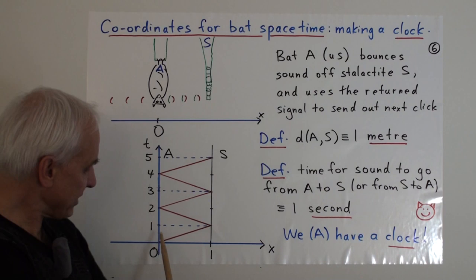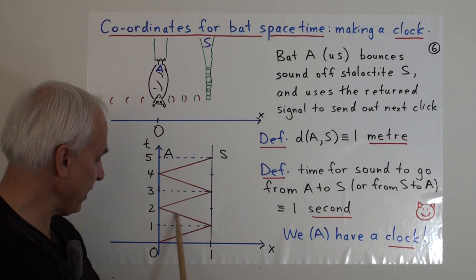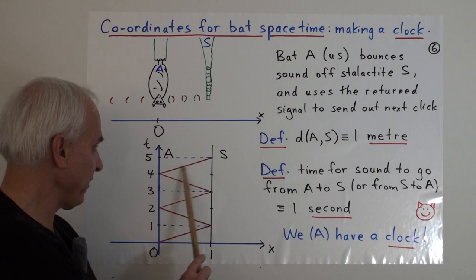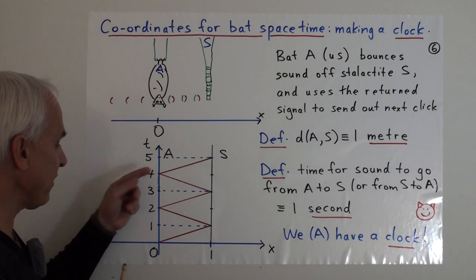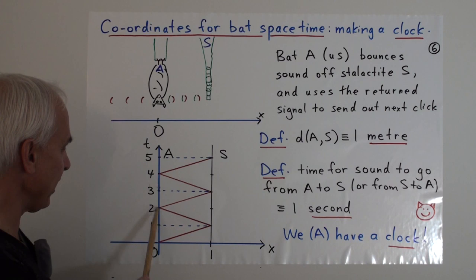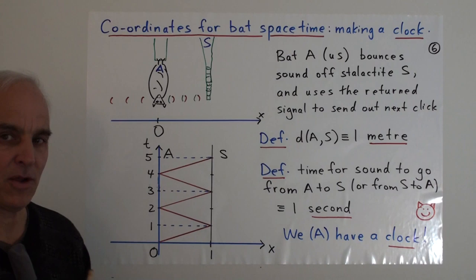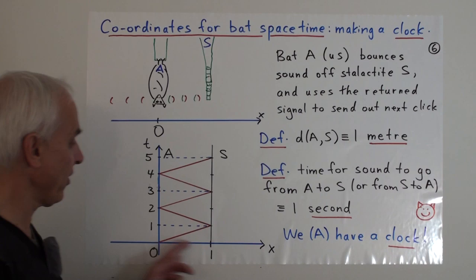And this sound that's bouncing back and forth is represented by these red lines. So, let's say here is a sound starting here, and it bounces off the stalactite and comes back there. And at that point, we send off another signal, which comes back there, and we send off another signal, and so on and so forth. This is defining for us a kind of a clock internally. Internally, we're going click, click, click. And it makes sense, say, to call these clicks at two, four, six, and so on. So, that we can think about the time taken for this sound to go from us to the stalactite as being exactly one unit.